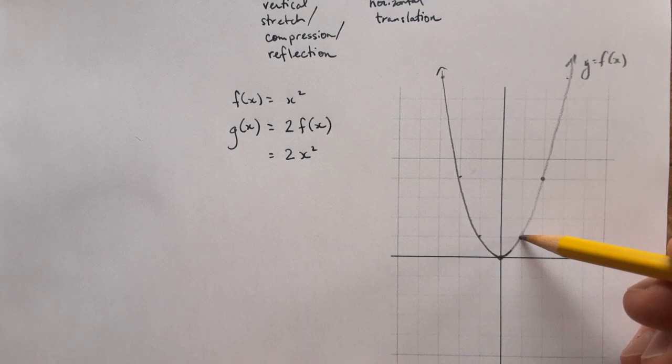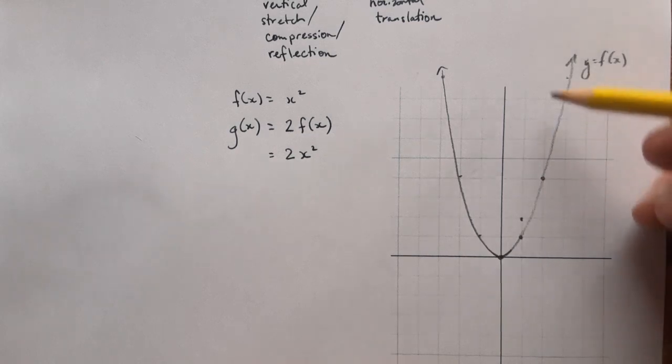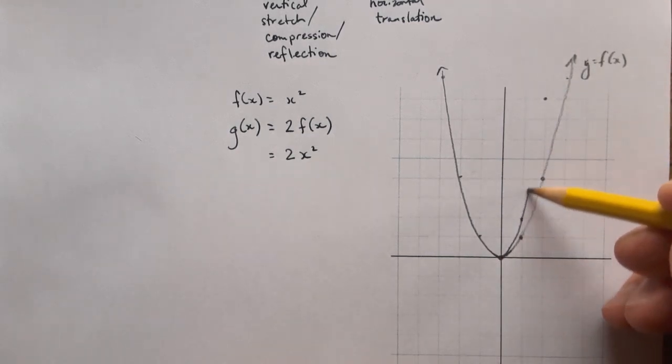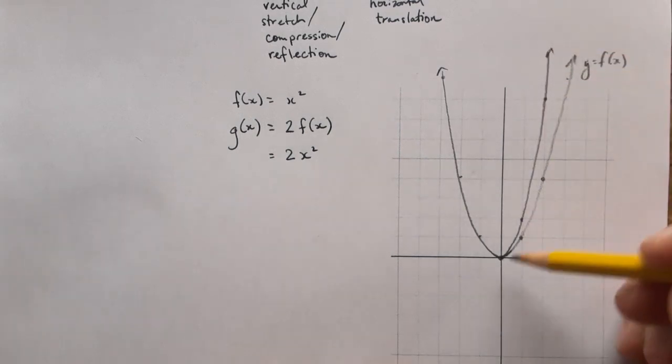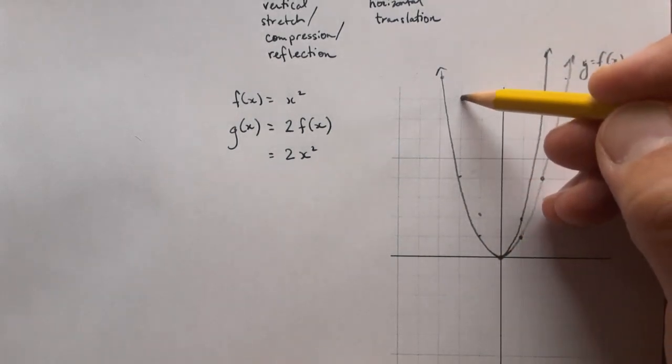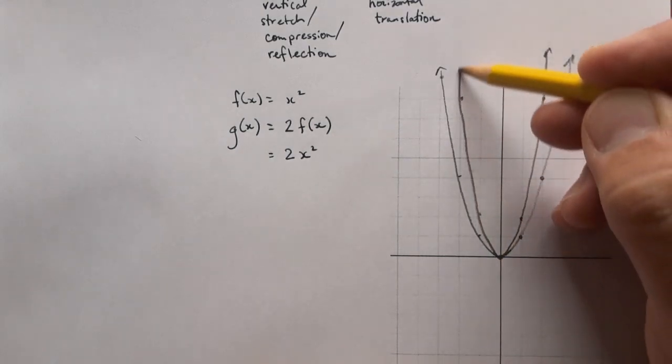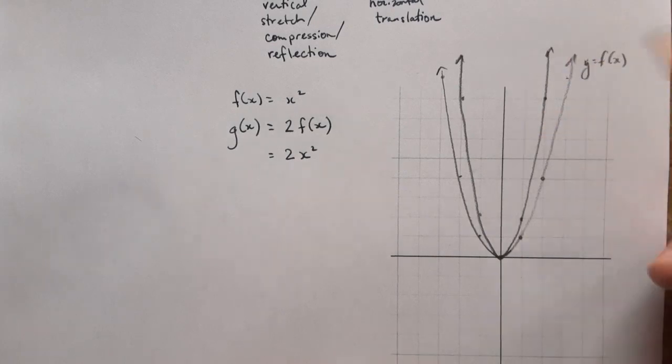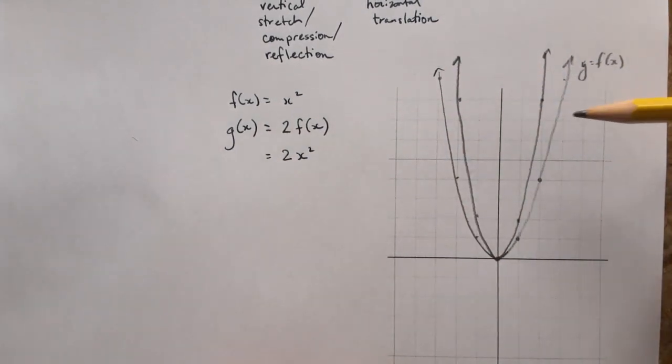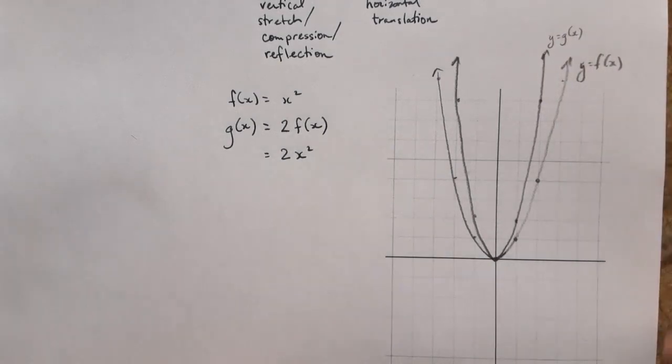So that point has a y value of one. It's going to become a y value of two. This is a y value of four. It becomes a y value of eight. And so the effect we see is that this seems to get kind of taller or skinnier. That's another way to think about it. And I would really prefer if you think about it as being stretched vertically rather than compressed horizontally, because that's going to be something we look at differently. So y equals g of x is right there.